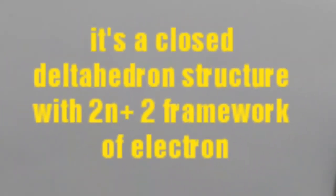The first type, closo structure. It's a closed deltahedron cluster with 2n plus 2 framework of electrons.